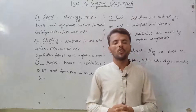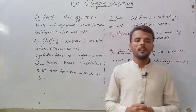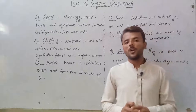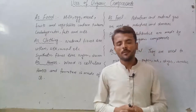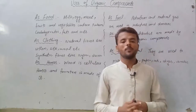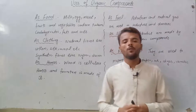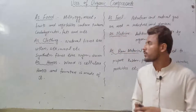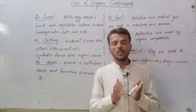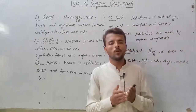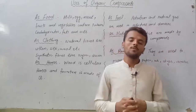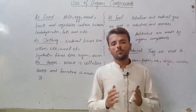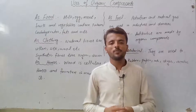We learned about organic compounds such as oils, proteins, carbohydrates, and vitamins. After the animals, we learned about proteins and fats. So here we will see proteins, fats, oils, and vitamins — where we can use them in our life.